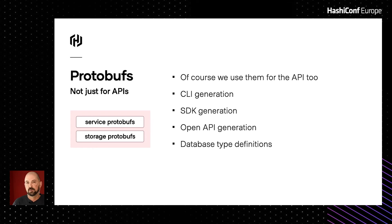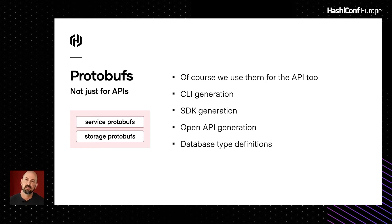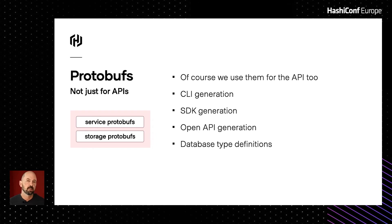We use protobufs for more than just the API. We use them to generate our CLI, our Go SDK, and for OpenAPI integration — the Swagger output you'll see from Boundary. We also define all our database types in protobufs, with extra tags to define primary keys, column names if they need to be overridden, and perhaps defaults for columns. Once we have those protobufs, especially at the storage layer, we can use them as we go down the architecture into lower layers like the infrastructure layer.